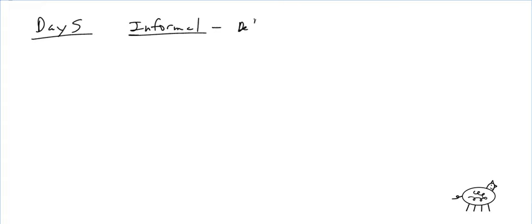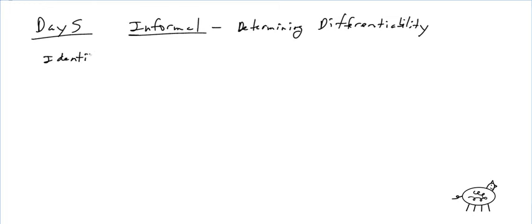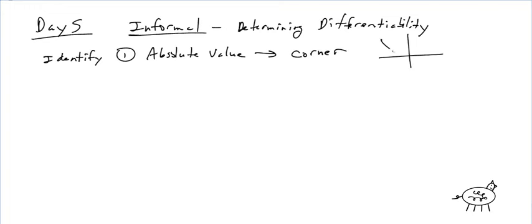Let's talk about determining differentiability informally by identifying key features. The first thing is absolute value. If you see anything with absolute value, whatever the function is, it's going to be a corner. Remember, absolute value has one slope going one way and another slope going the other way — they're different slopes, not infinite, not positive or negative infinity. So it's going to be a corner.